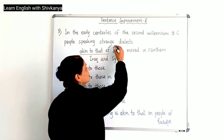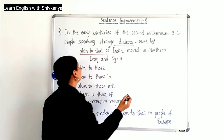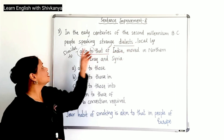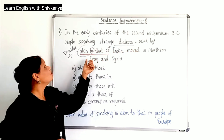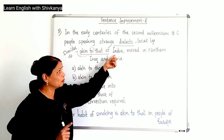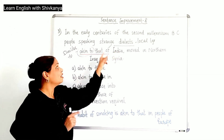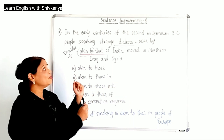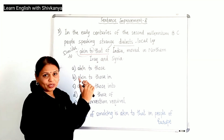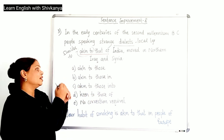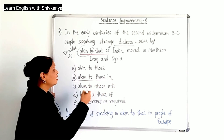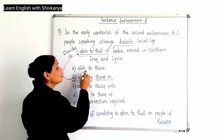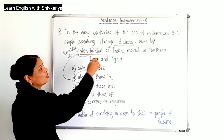First, we need to understand the meaning of 'dialects' — dialects means the local languages. And 'akin to' means similar to. The meaning is: during the second millennium BC, people speaking strange local languages which were similar to those of India. The languages were not similar to India as a country; they were similar to those languages which were spoken in India. So 'akin to those in India' — replace this phrase here. Strange dialects which were akin to those in India means which were similar to those spoken in India, who moved in northern Iraq and Syria. So B is the correct option.